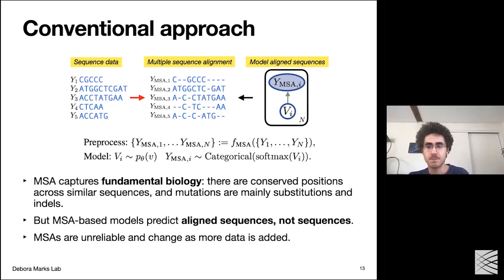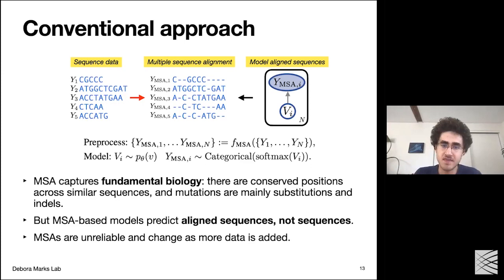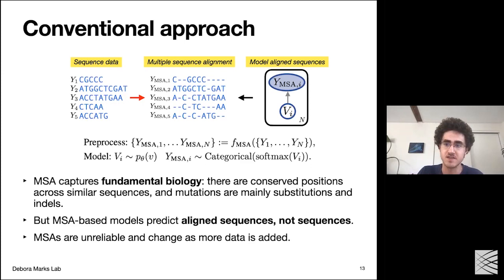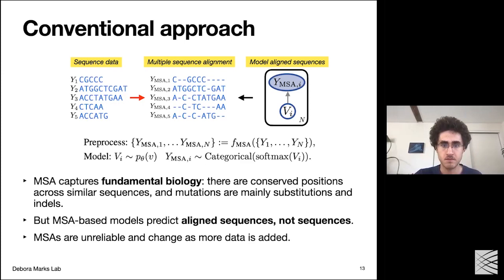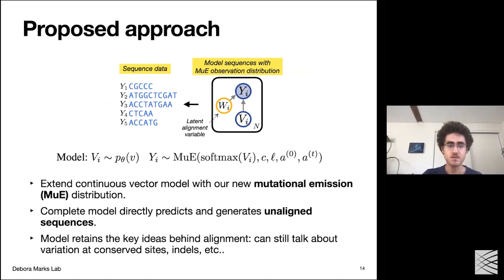This is a real problem in actual important datasets. In the case of immune receptors, there's a 10x growth in the dimension of the pre-processed data as we go from 10 data points to 10,000. The issue with this is not simply that MSAs are unreliable — the issue actually has to do with model criticism. The models you build to predict sequences using MSA-preprocessed data aren't really predicting sequences; they're predicting aligned sequences.